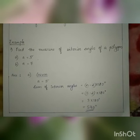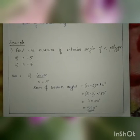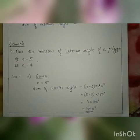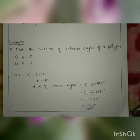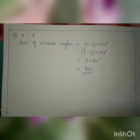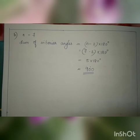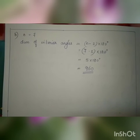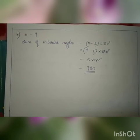To find the sum of interior angles, first write the equation: n minus 2 into 180 degrees. The question gives the value of n; substitute it into the equation. For part B, n equals 7. So: 7 minus 2 into 180 degrees equals 5 into 180 degrees equals 900 degrees.